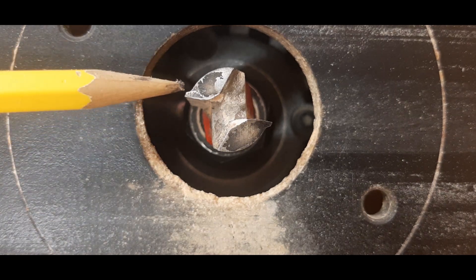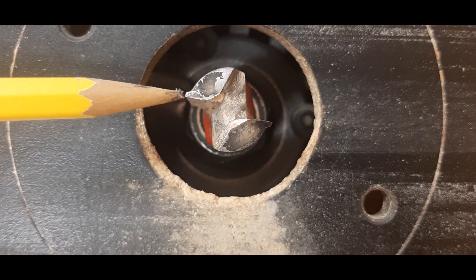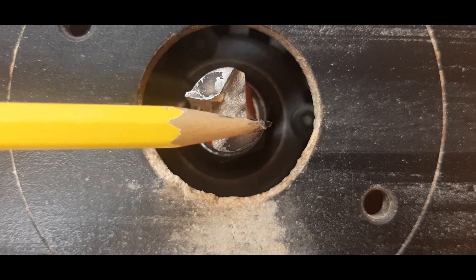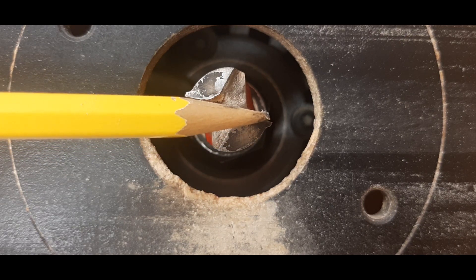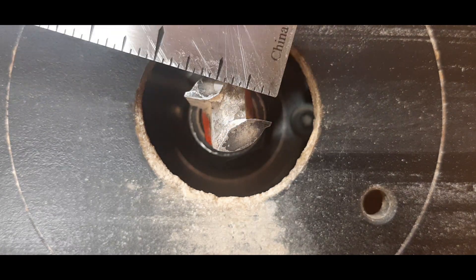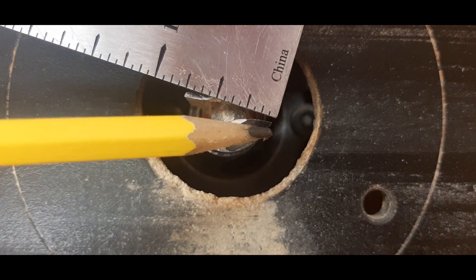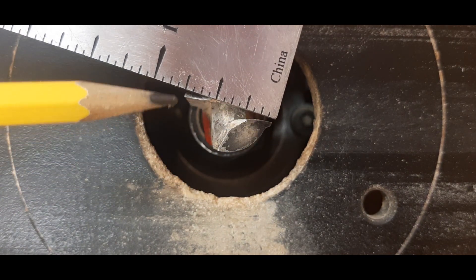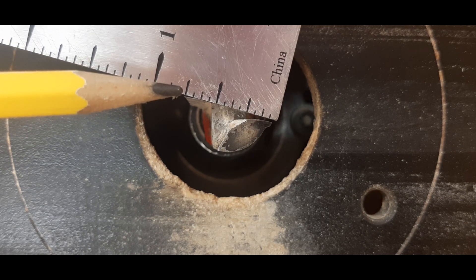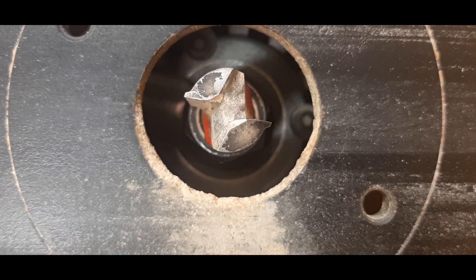To figure out the size of the router bit, you're going to look at it, and you're going to measure the distance from this point here to this point here. So you grab your ruler, and you measure that distance. So the distance from here to here is three quarters of an inch. So this is the correct router bit.